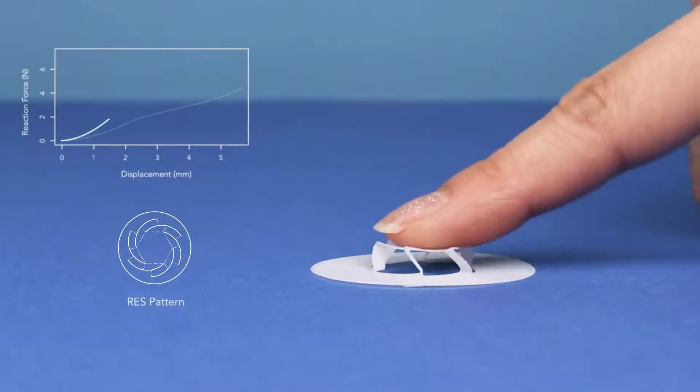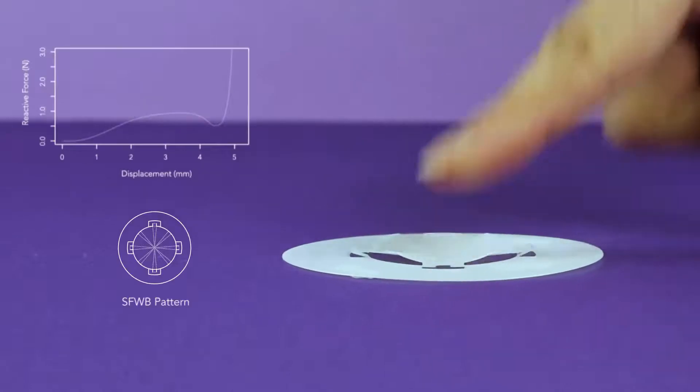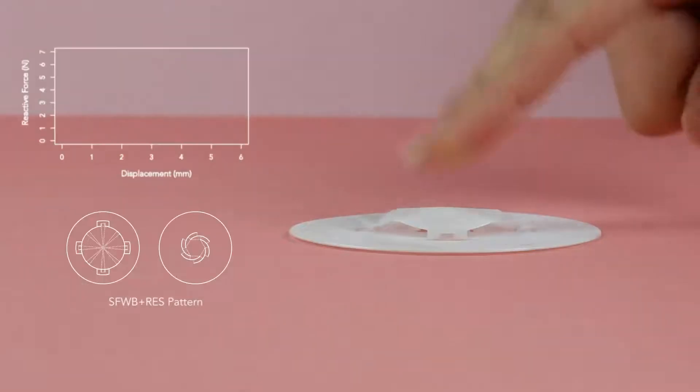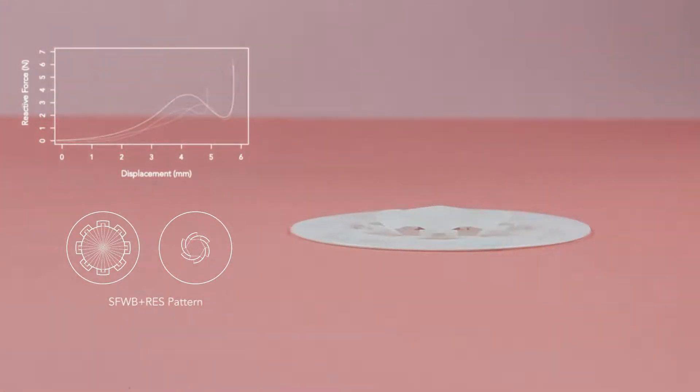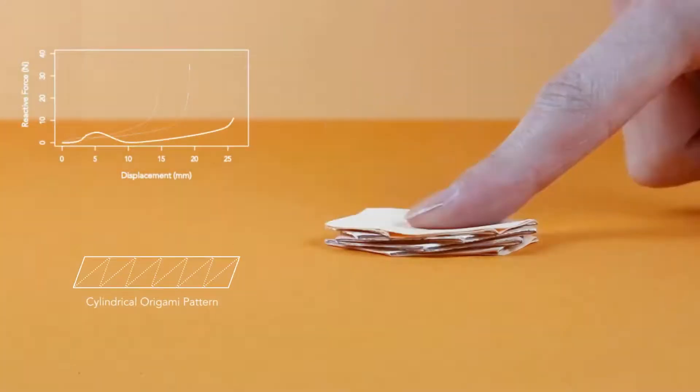As you can see, in each primitive, the changing of the geometry of the 2D patterns results in variations of the form factors of 3D buttons and the rendered haptic profiles. This is RAS, split fold water bone, the overlaid structure of split fold water bone, and this is cylindrical origami.